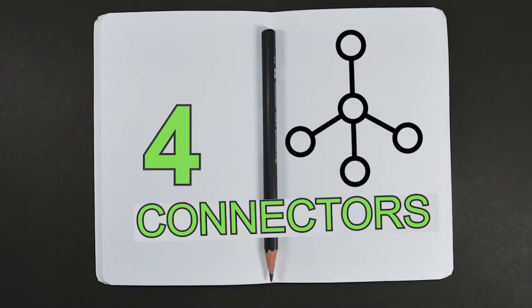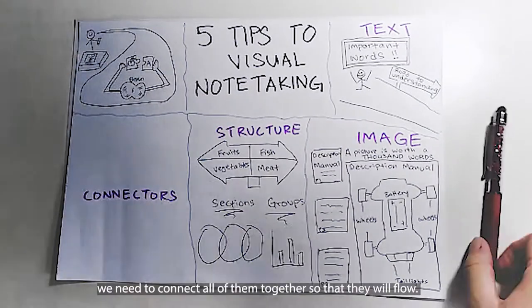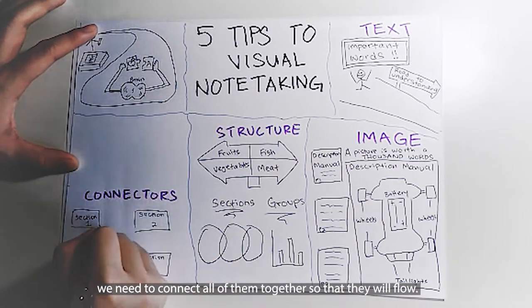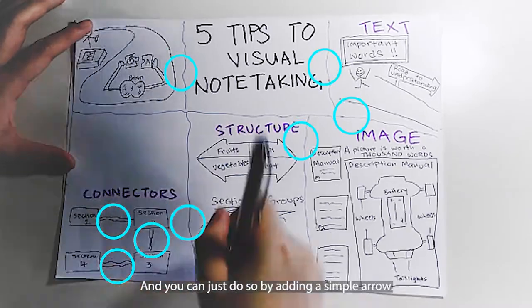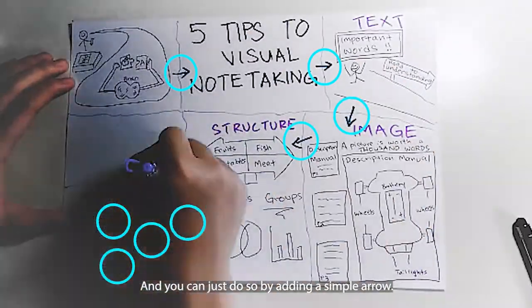And we have the connectors. Since we have so many sections, we need to connect all of them together so that they will flow. And you can just do so by adding a simple arrow.